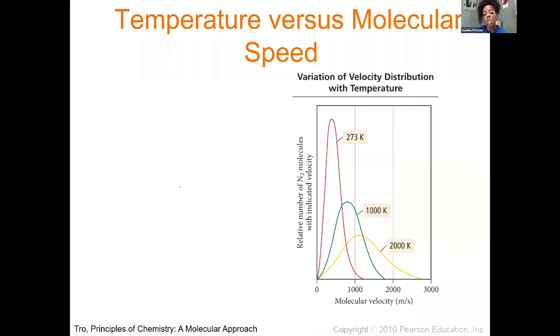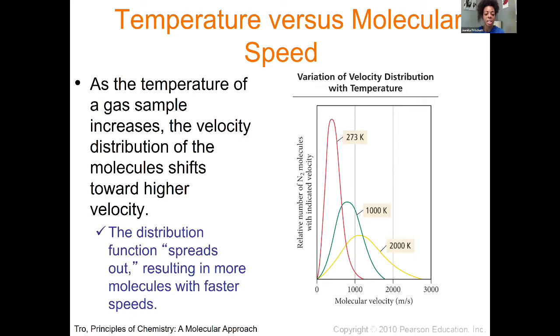Temperature will affect the molecular speed. As the temperature of a gas sample increases, we expect the velocity distribution of the molecule to shift towards higher velocities. They're gaining more energy, so they're able to move a lot faster as the temperature is increased.